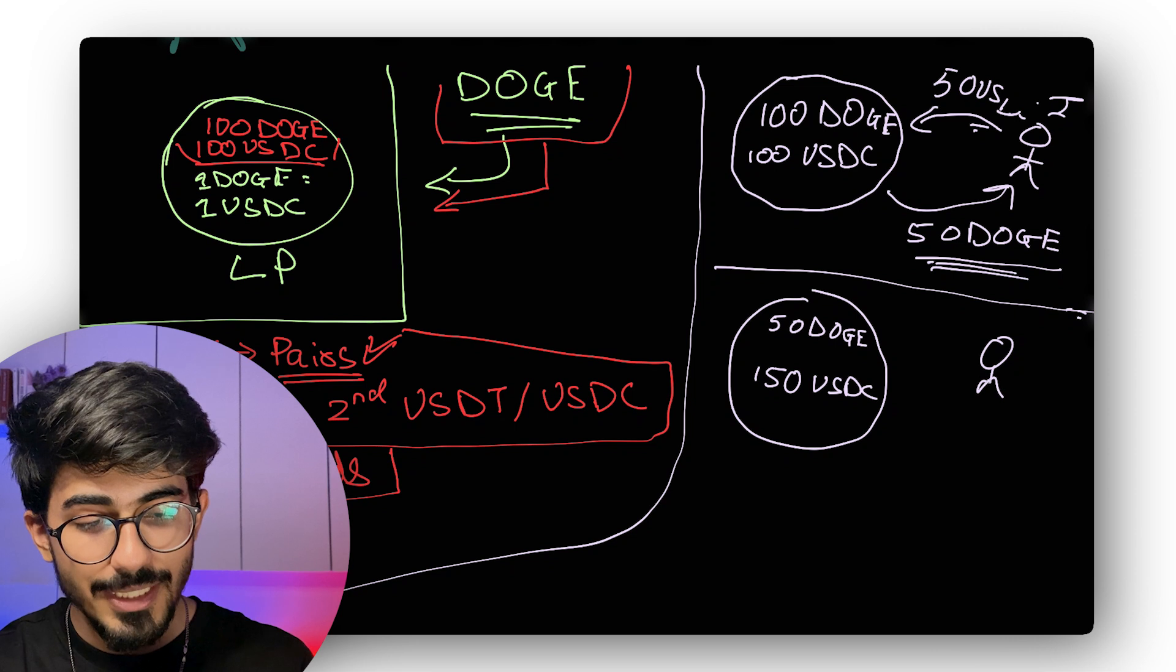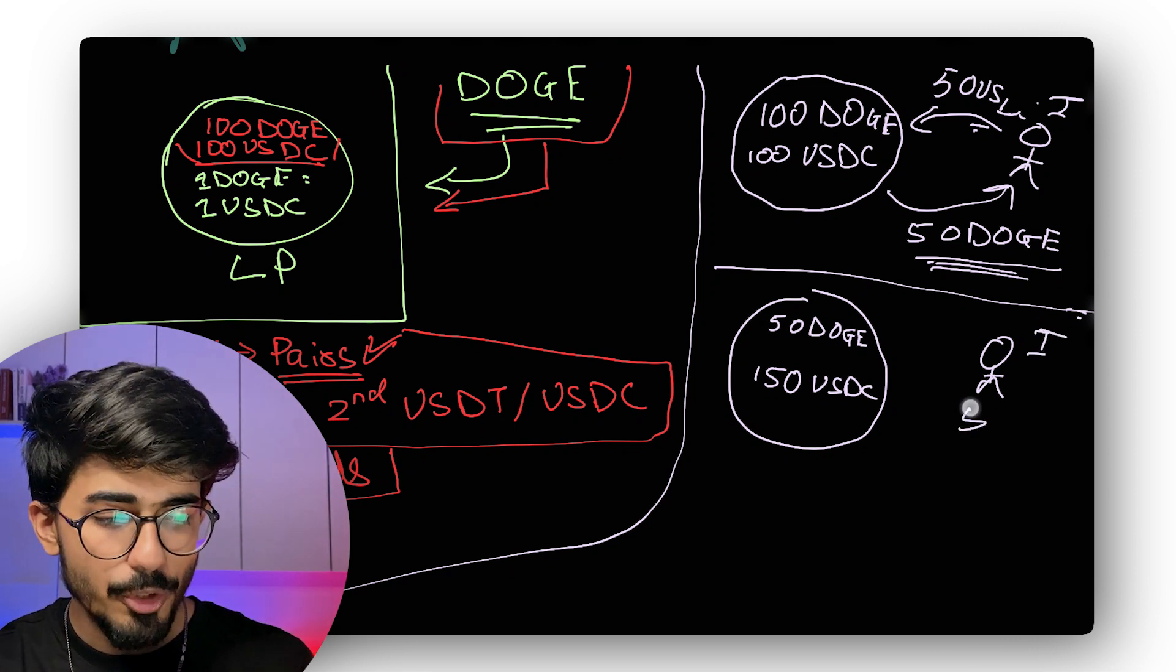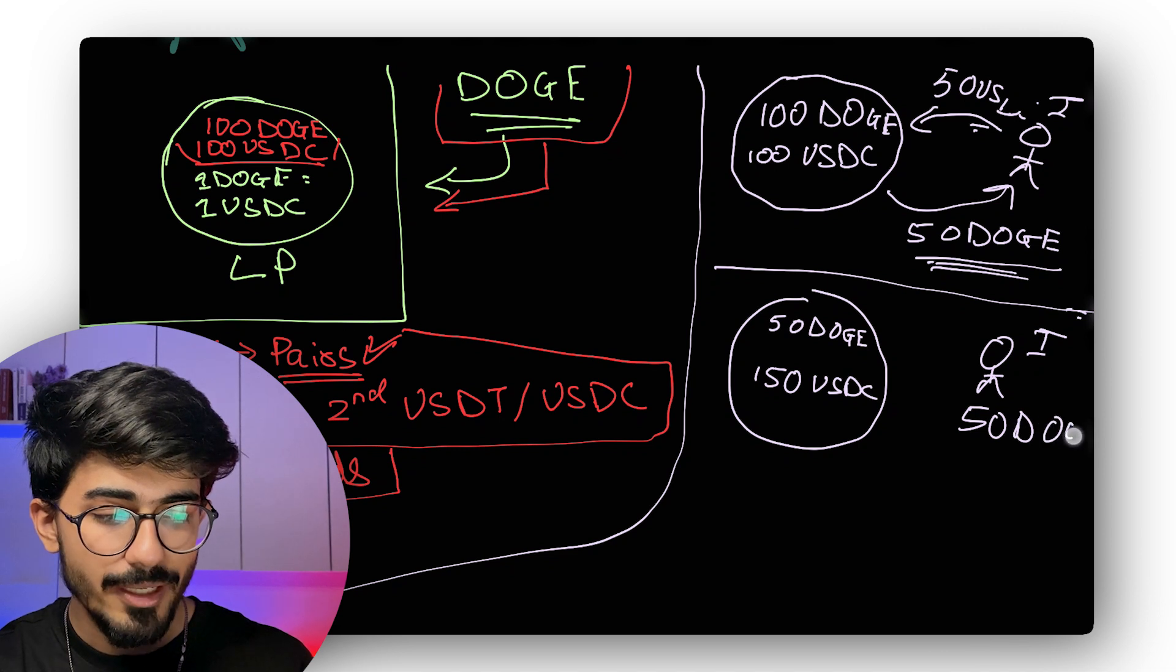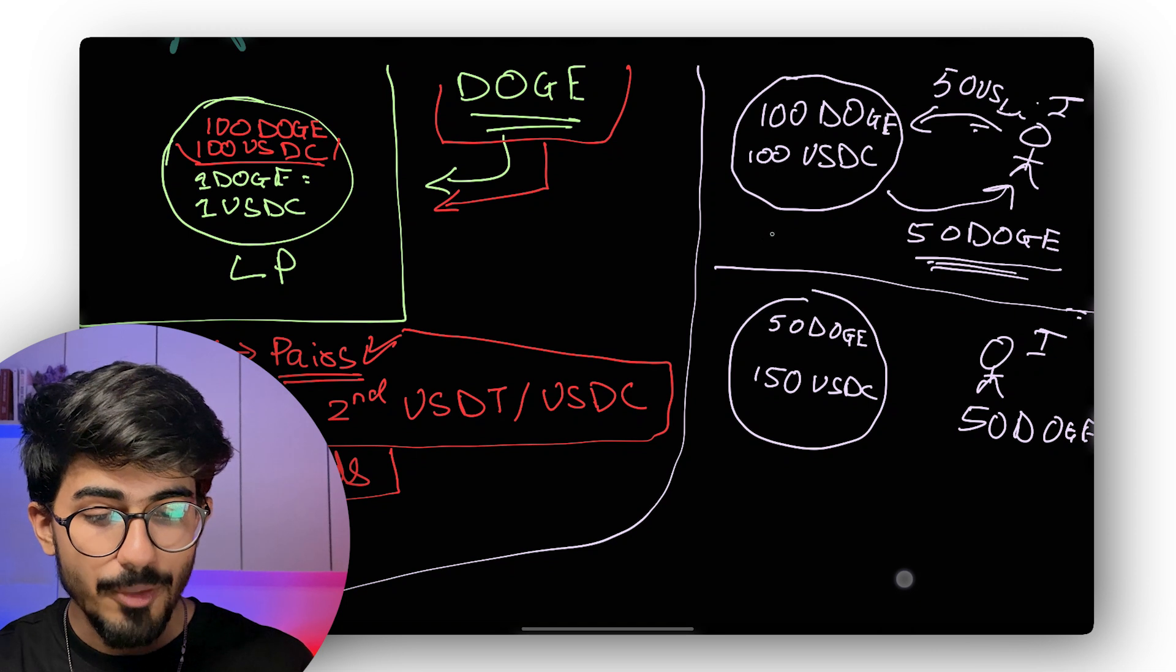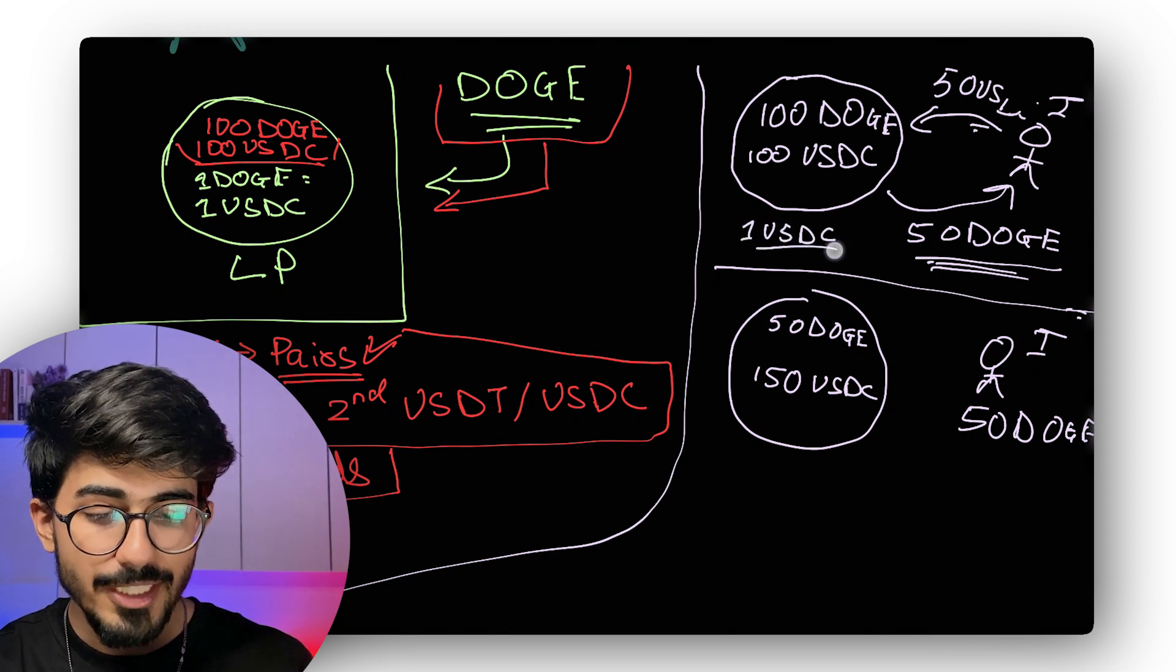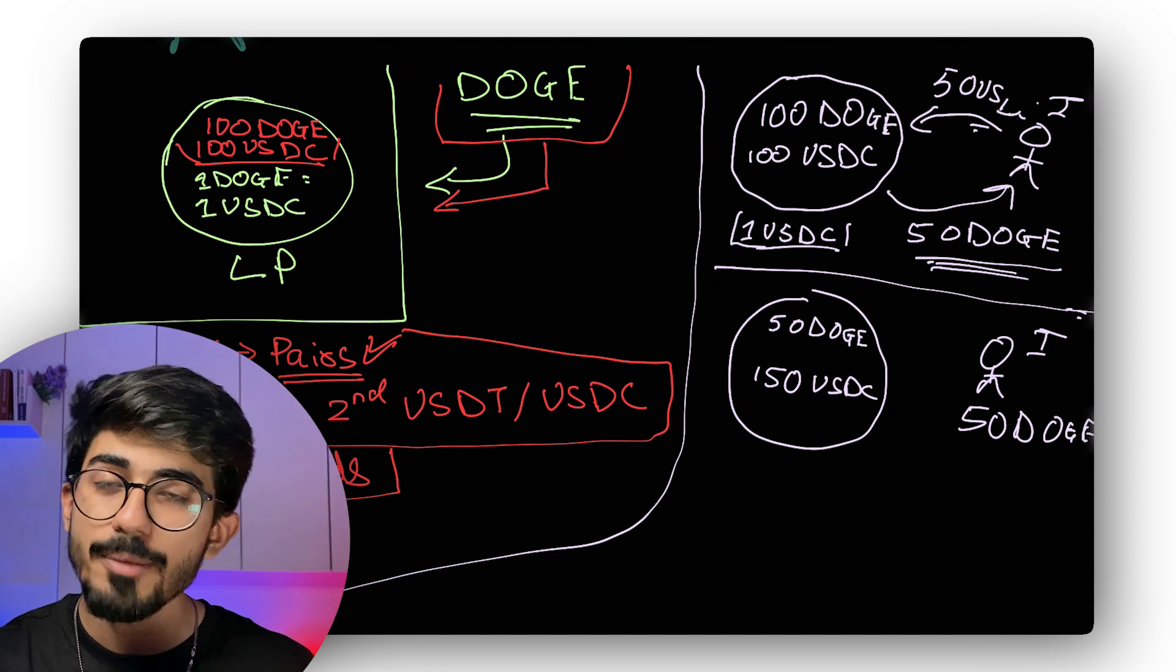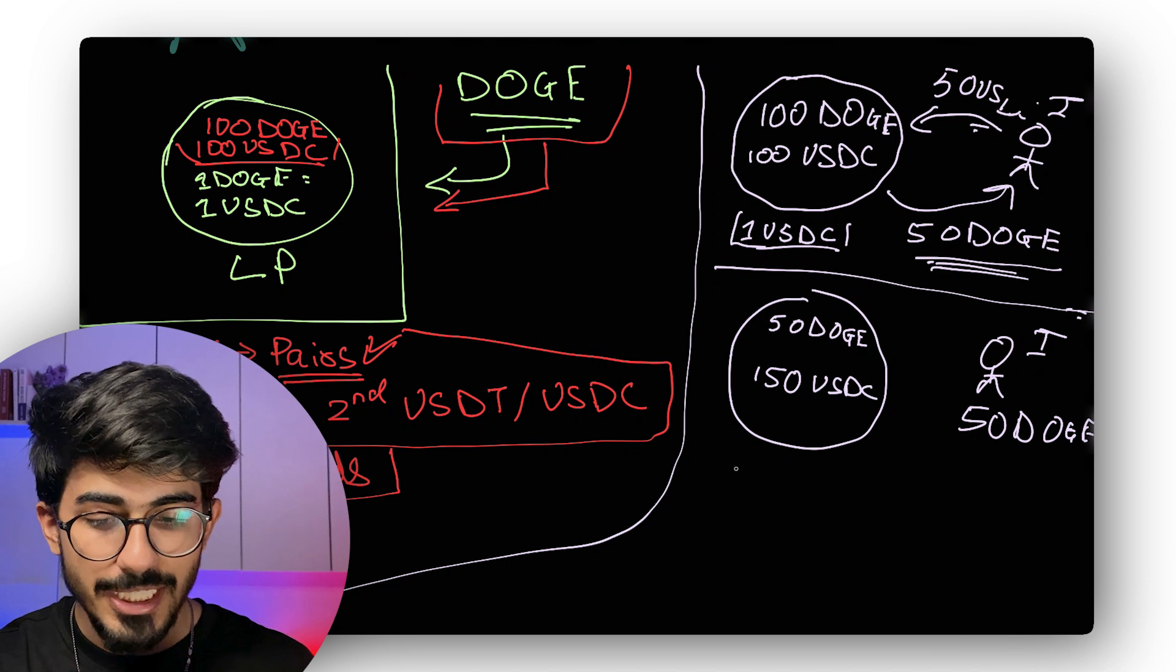Now, this particular investor is now left with around 50 Doge and is down by 50 USDC. So the price of Doge tokens previously was around 1 USDC, right? So for every USDC, you were able to buy 1 Doge token. But now, the price has actually changed.